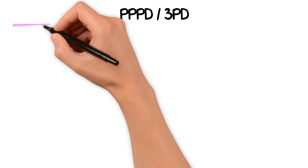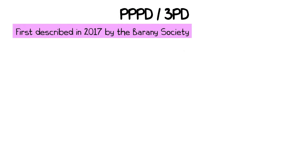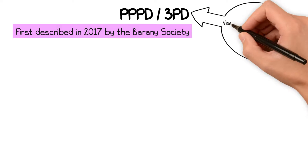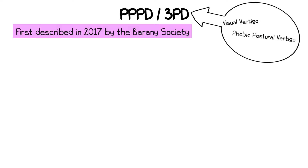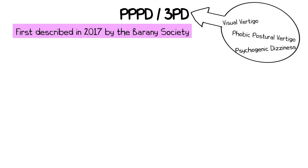3PD is a relatively new clinical condition described in 2017 by the Barany Society, and encompasses a number of different conditions that may have previously been termed as visual vertigo, phobic postural vertigo, psychogenic dizziness, and chronic subjective dizziness.